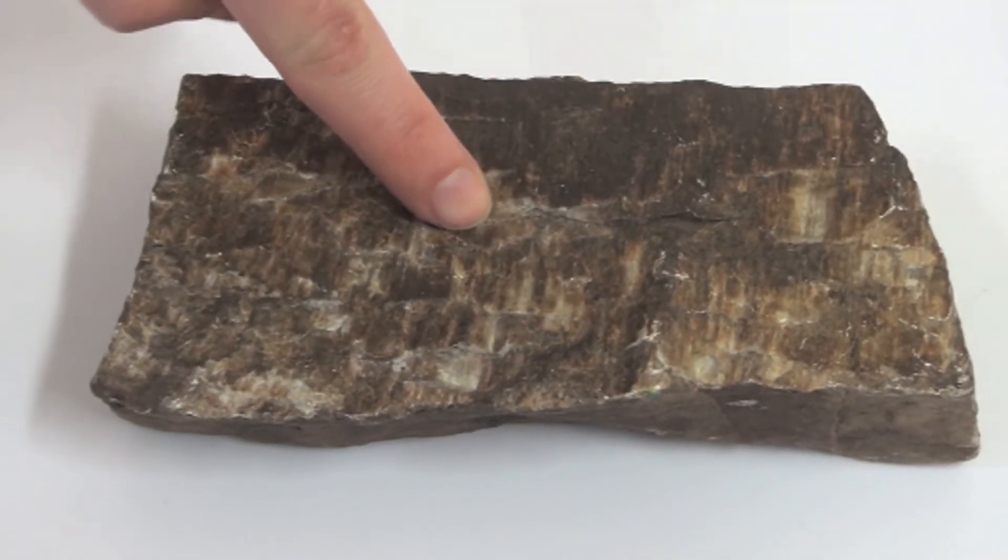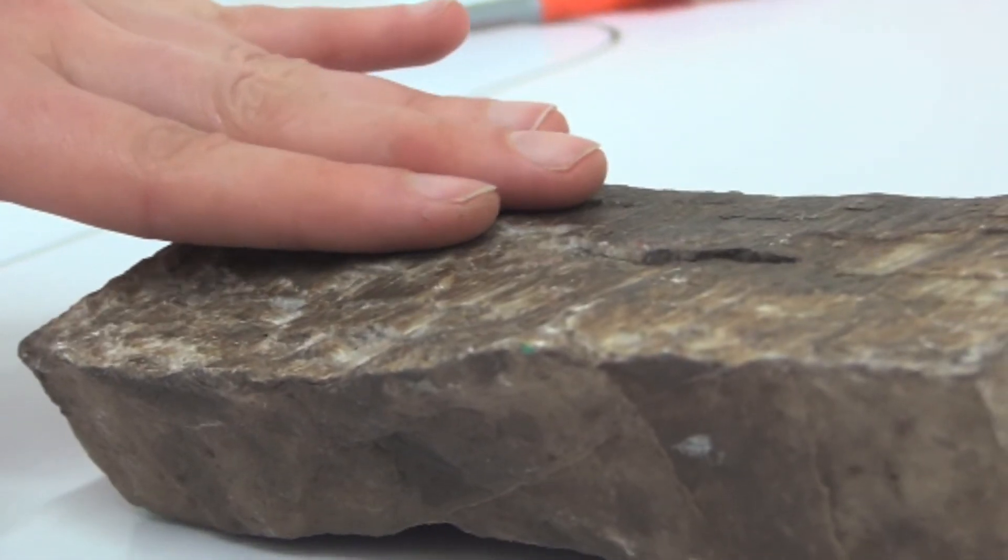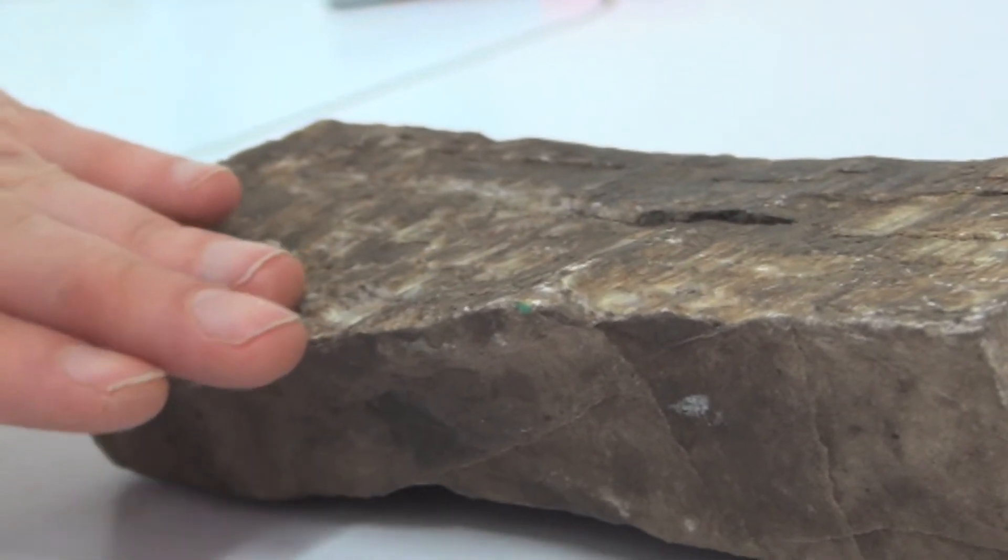So here we have an example of a rock which uses steps as an indicator of shear sense. The surface will feel smooth when you move your hand towards the direction of shear.